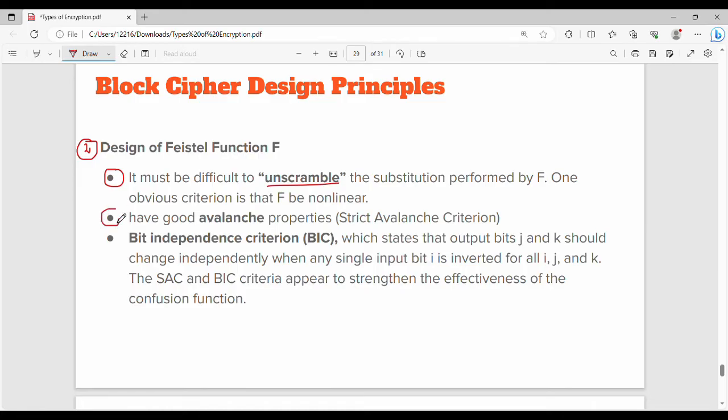Point number two: It must have good avalanche properties. Avalanche effect, what do we call the Avalanche effect? A small change in input, a small change in plain text, will have significant impact on my ciphertext. If there is a great Feistel Function, there is a great Avalanche property.